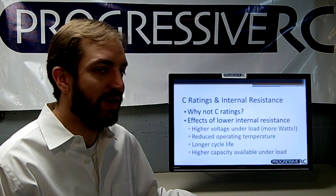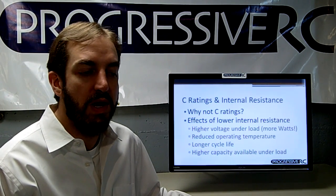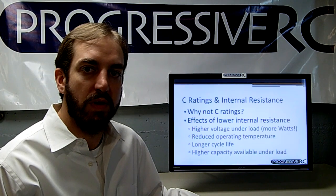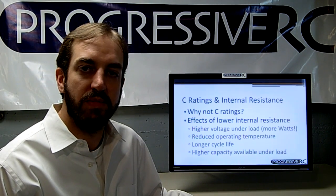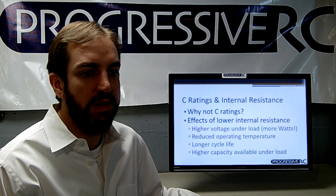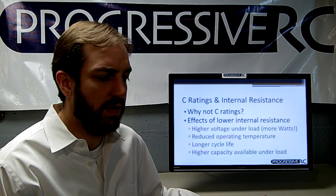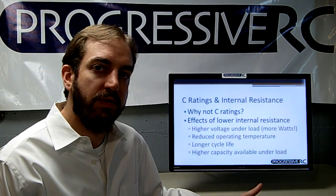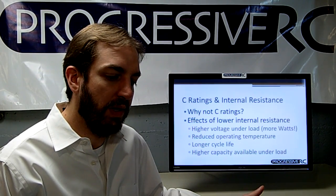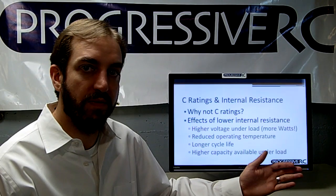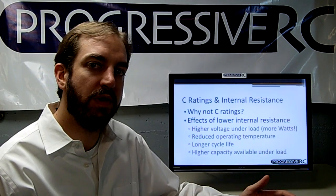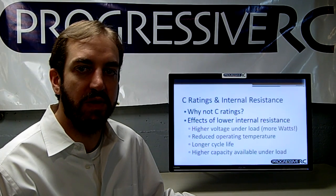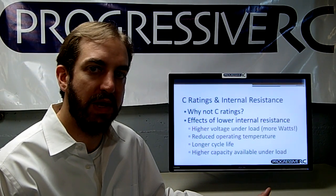This brings us to C-ratings and internal resistance. C-ratings were a good idea — an attempt by manufacturers to help determine the maximum amount of amps you could pull from a battery. Unfortunately, due to competition and other market forces, they became kind of useless marketing. One manufacturer learned that by tweaking how the C-rating was measured — going down to a lower voltage, charging more fully, or allowing a higher temperature cutoff — they could get a higher C-rating. In the end, no battery manufacturers really test for C-ratings in a consistent way anymore.